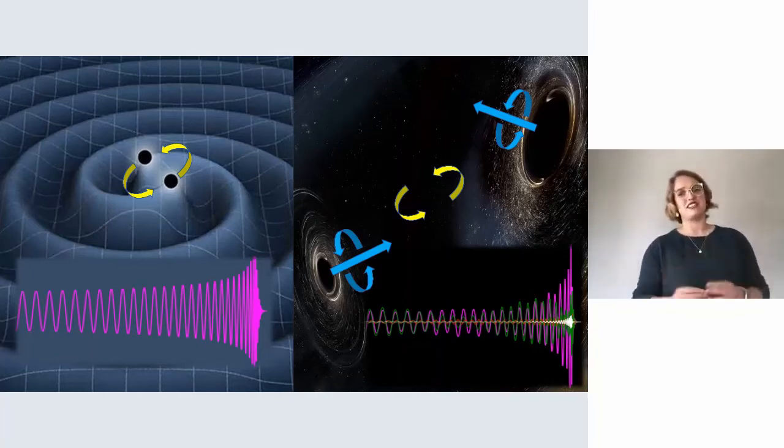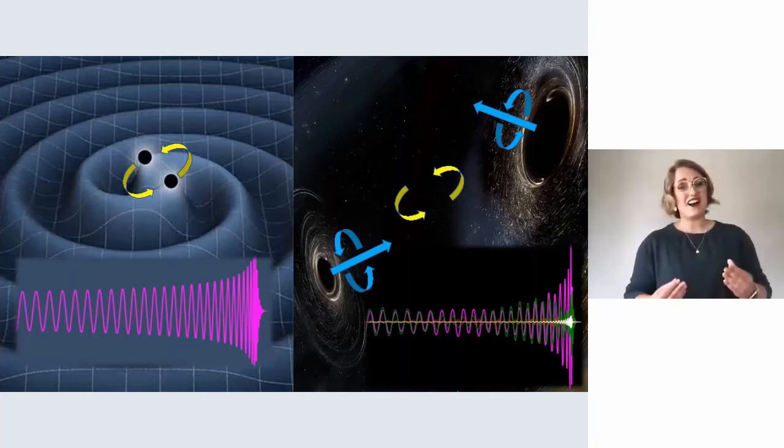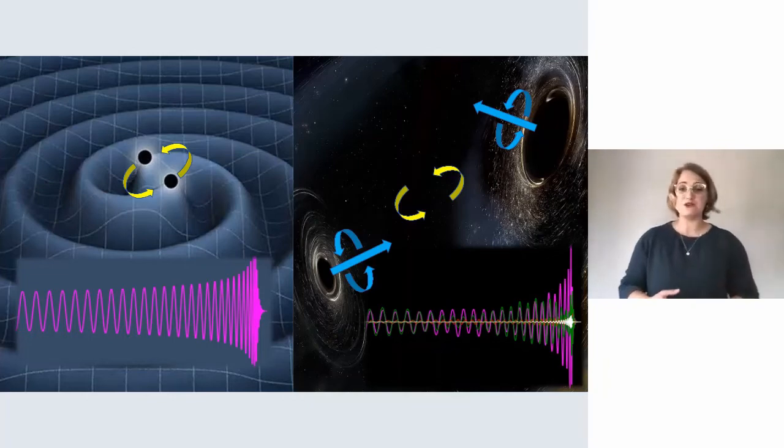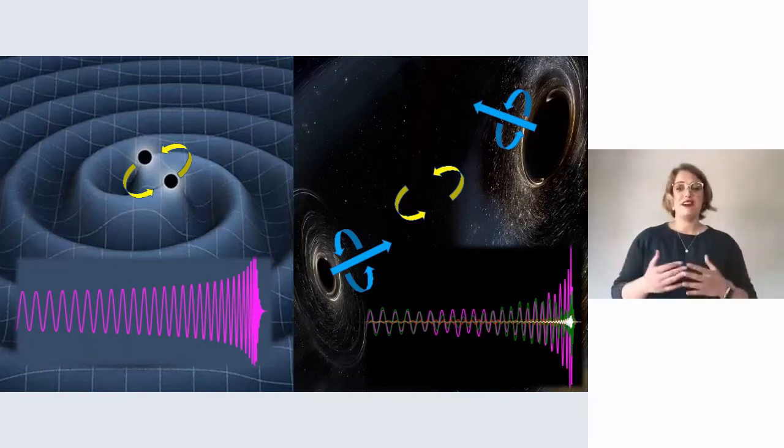When I say tiny, I mean minuscule. Forget needle in a haystack—it's akin to finding a needle in the Milky Way galaxy. But we know what we're looking for. By building models of the signal we expect to find and comparing them to detector data, we can find a match.